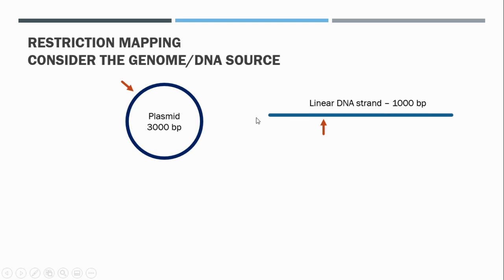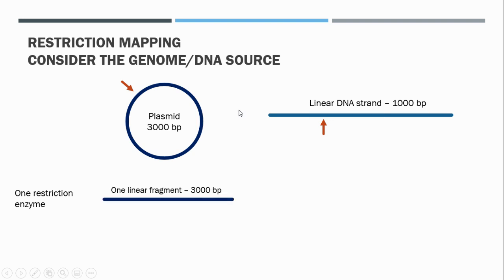In the case of the plasmid, we're cleaving it with one restriction enzyme at one position in the circular genome. If we were to run this product on an agarose gel, we would see just one linear fragment which is the length of the plasmid — 3000 base pairs. Drawing an analogy to a rubber band, we are cleaving this fragment with one restriction enzyme, which is analogous to cutting a rubber band with scissors in just one position.